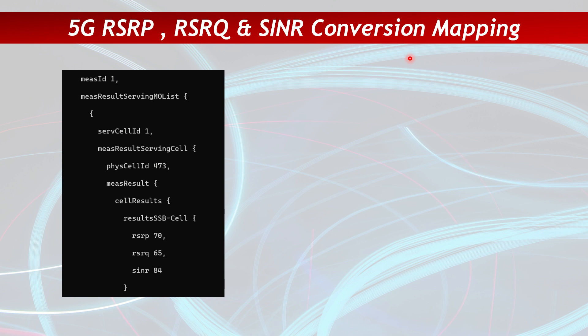For instance, if you are trying to attach to 5G in case of NSA, you will send a B1 measurement report that carries RSRP and RSRQ. Similarly, if you need to do a handover or a PSCell change, you send a measurement report carrying RSRP and RSRQ. Also, in case of a radio link failure or call drop, the UE sends an RLF report which carries RSRP, RSRQ, and SINR as well.